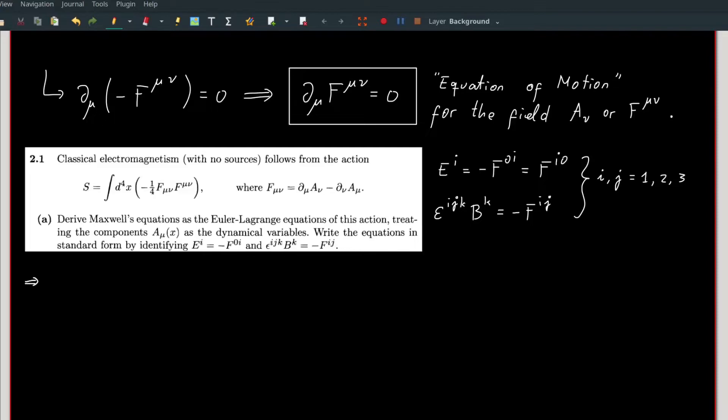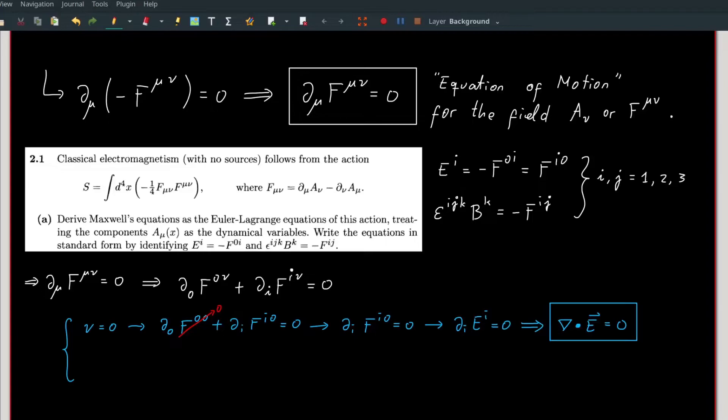Starting from our equation of motion, we can expand the summation of the dummy index mu into the zeroth component plus the i-th component. Now, let us check various possible values of nu. If nu is zero, the first term vanish because f is anti-symmetric, leaving us with only the second term. Identifying that f^{i0} is the i-th component of the electric field, and go back to the standard vector notation. This leaves us with the Gauss law in vacuum, that the divergence of the electric field equals to zero.